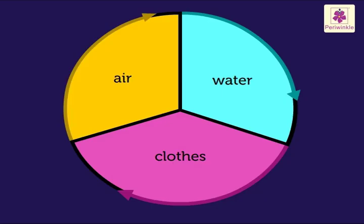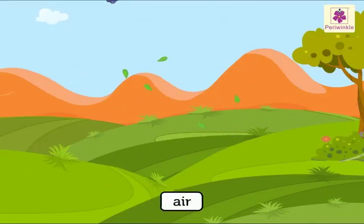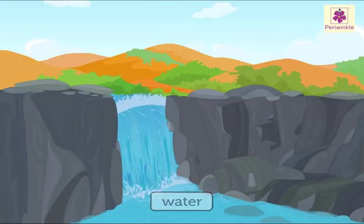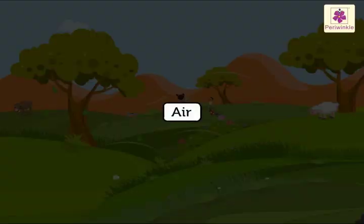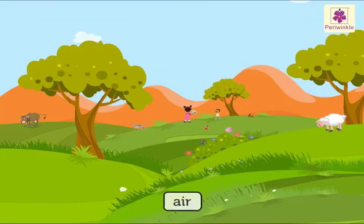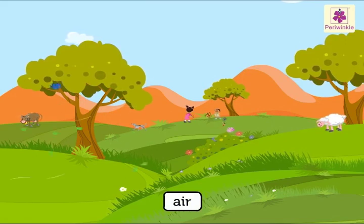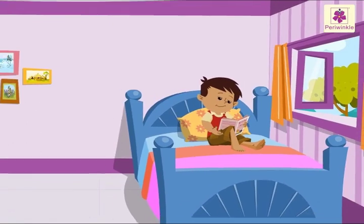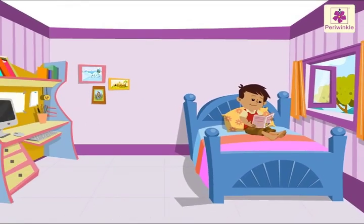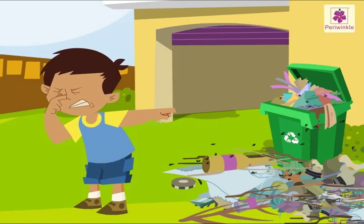We have certain basic needs. Three of them are air, water, and clothing. Air is all around us, even in the room where you are sitting, but it cannot be seen, felt, tasted, or smelt unless it is dirty.